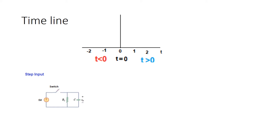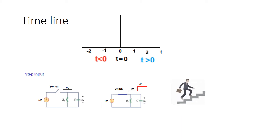What is a step input? In this circuit, the switch is open, so there's no supply to the RLC circuit, and the input is zero volts. Now if we close this switch, five volts will suddenly be applied to the RC circuit — a jump from zero to five volts. This is like a step, and that is why this type of voltage application through a switch is called step response.